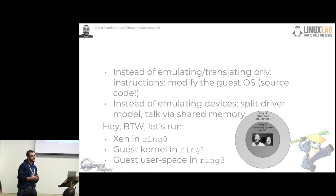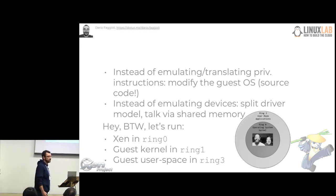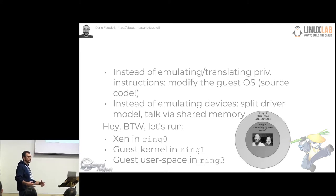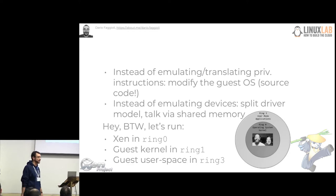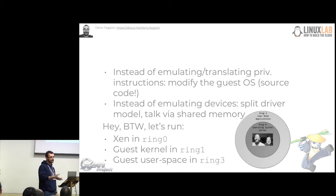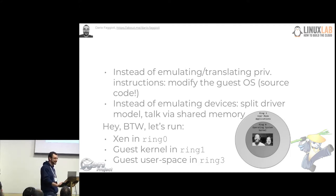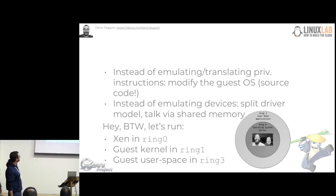Basically what Xen came out with was a sort of paradigm shift, which they called para-virtualization. The idea is that instead of trying to intercept on the fly and translate or emulate the privileged instructions — which makes it very difficult or actually impossible to virtualize a guest operating system on x86 — let's do it the other way around. Let's go into the source of the guest operating system we want to run and modify it by getting rid of those privileged instructions and putting something else there instead.